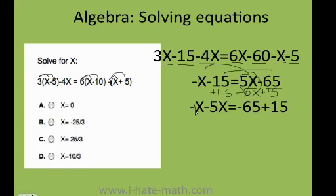Now I can group my x's. Negative 1x minus 5x equals negative 6x. Negative 65 plus 15 is negative 50. We're almost done.